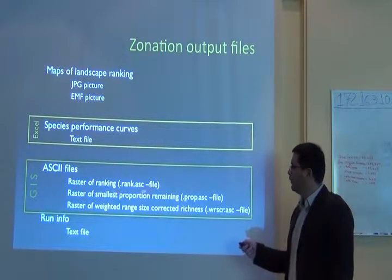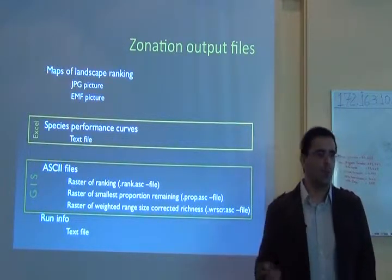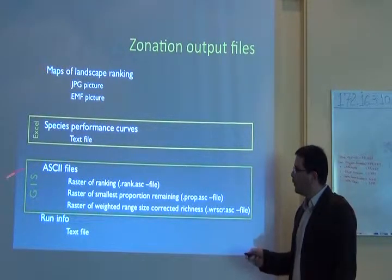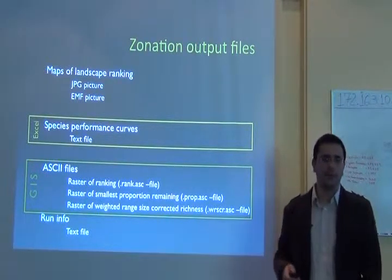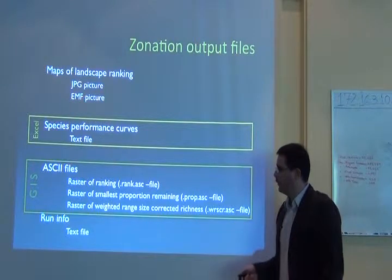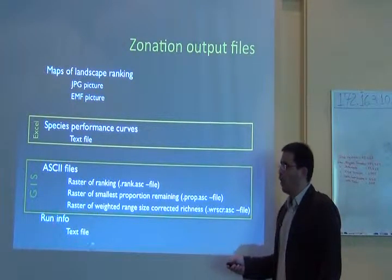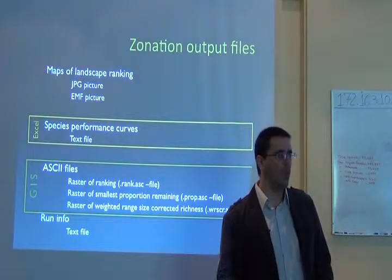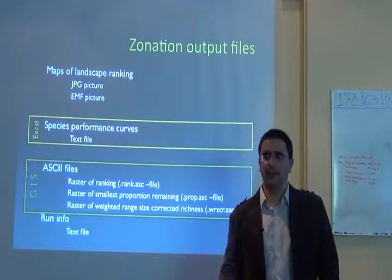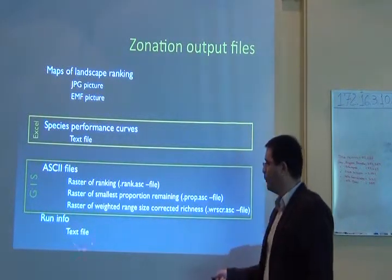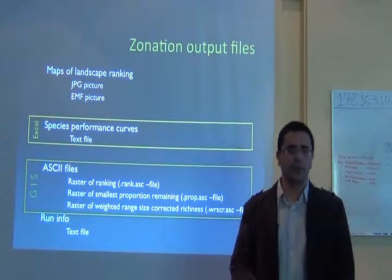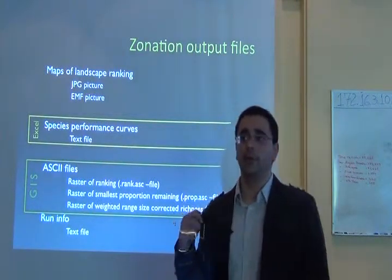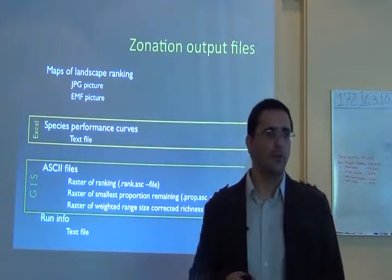It also gives you a raster for the smallest proportion remaining, which indicates the level of protection you're getting in the area. You can work with all these files in any GIS software — they're just text files. It will also give you a log or run file: a text file containing all the parameters of the analysis, what the software did during the run, so you can check for problems or recall which parameters you used in a previous analysis.